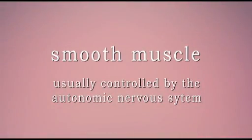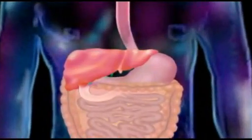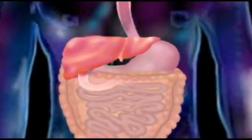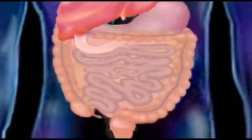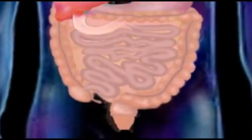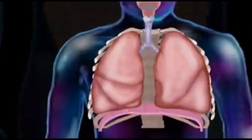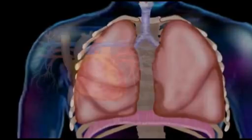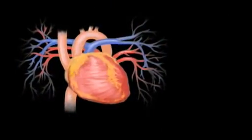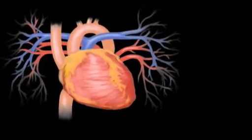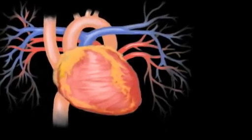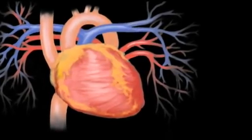Smooth muscle tissue is different. It is usually controlled by the autonomic nervous system, and we are not aware of it. Smooth muscle exists in the walls of many of our internal organs, including most of the digestive system, the airways of the respiratory system, and our blood vessels. It can either contract or relax to control the width of these passages.